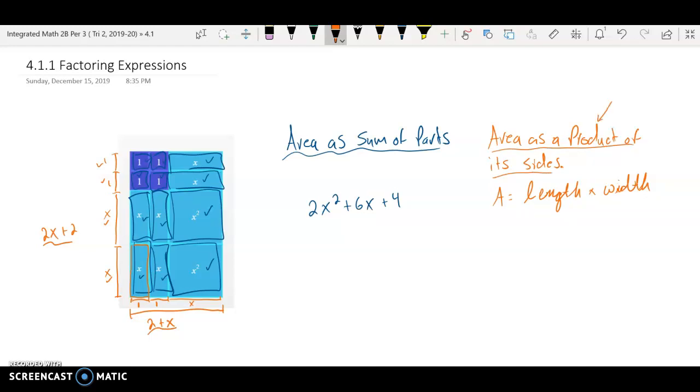Product meaning multiplying, it's multiplying these two sides, the length and the width. So this becomes two plus x times two x plus two.